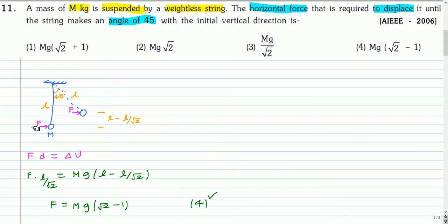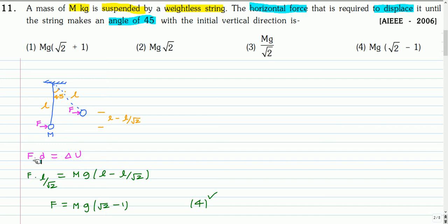Here is the solution. Initially the mass m is in a vertical position attached to a string of length L, and a horizontal force is applied throughout until it makes an angle of 45 degrees with the vertical. The work done in moving from the initial to the final position under this constant force equals F dot displacement, which equals the increase in potential energy of mass m. So F times the component of displacement along the direction of force.